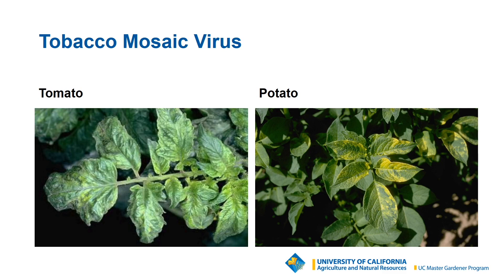This is what the symptoms look like on tomatoes and potatoes. This disease affects things related to tomatoes, like tobacco and potato — nightshade family things. On the left, you can see that the tomato has some yellow color that's mottled and random throughout it, with some puckering. On the right, you can see the mottled design of the virus on the potato much more clearly — random yellow splotches. It's called a mosaic disease because it has these random irregular yellow mottled color throughout the plant and on the fruit.